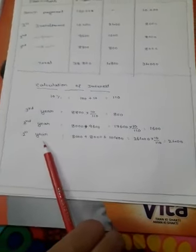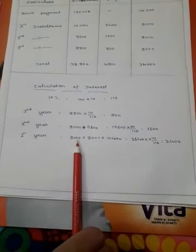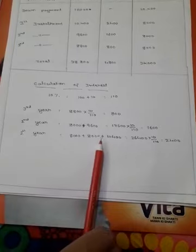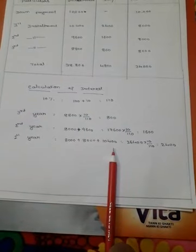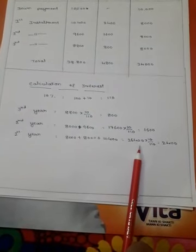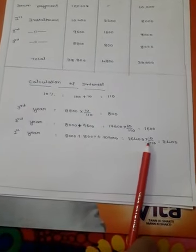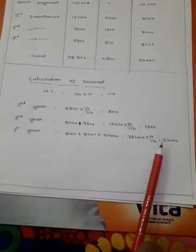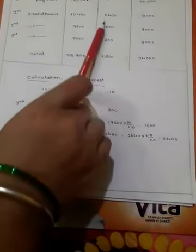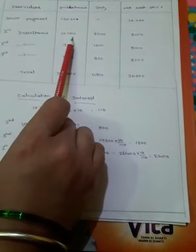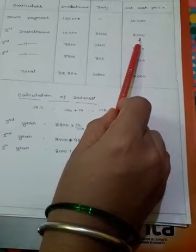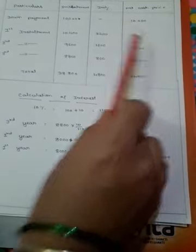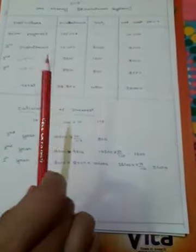1st installment is 8000 plus 8000 plus installment is 10400, 3 plus is 26400 into 10 divided by 110. 1st year is 2400, 10400 minus 2400, net cash price is 8000. So 3 columns are total.